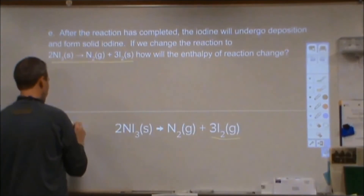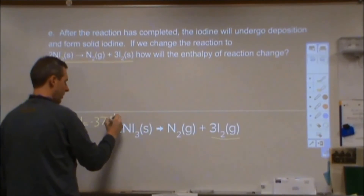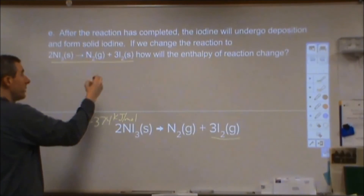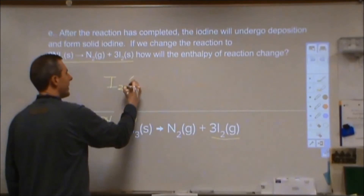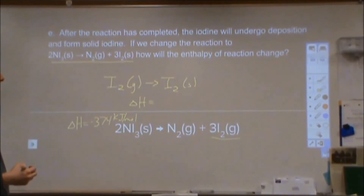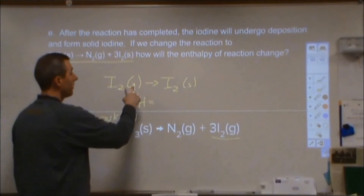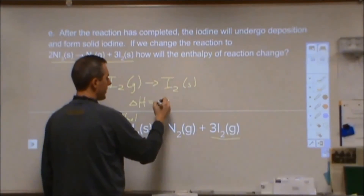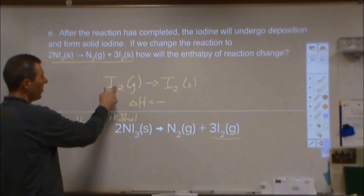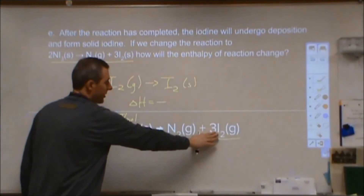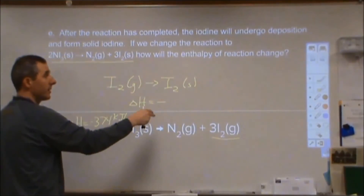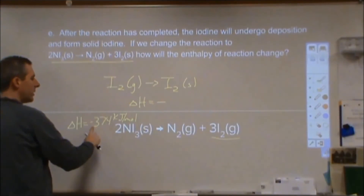Our enthalpy for this reaction was negative 374 kJ/mol. Will that value be more or less negative if we go to the solid form? If we consider iodine gas converting to iodine solid, that change is exothermic — we're cooling down and releasing enthalpy to the surroundings, so ΔH is negative for that step. Using a Hess's law approach, we add that negative value to our original reaction, which makes the total more negative.